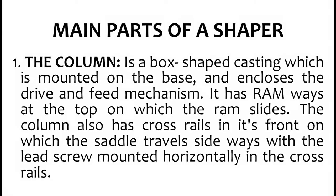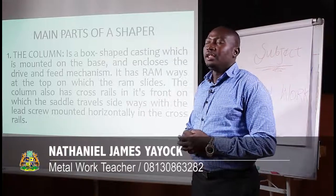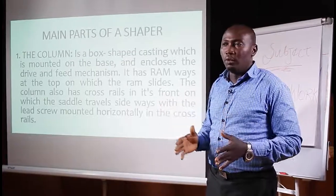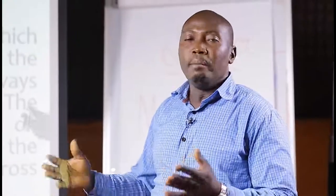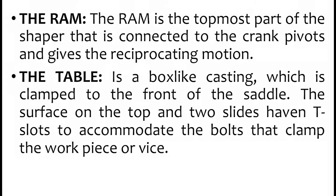The first main part is the column. The column is a box-shaped casting which is mounted on the base and encloses the drive and feed mechanism. It has a ram guideway at the top on which the ram slides. The column also has a cross rail in its front on which the saddle travels sideways, with the lead screw mounted horizontally in the cross rail. The column is what all other members of the shaping machine are built upon.